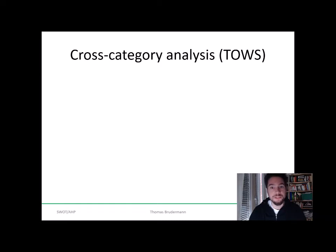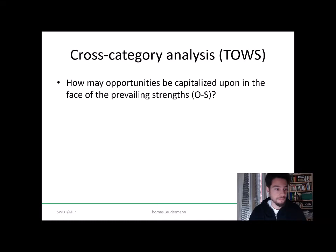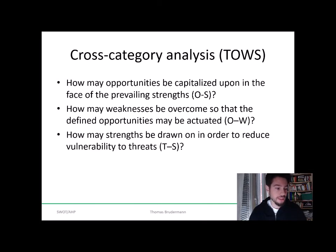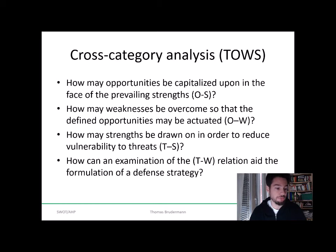A cross-category analysis can enhance your SWOT analysis by drafting certain strategies based on your analysis. For example, you can ask yourself how the opportunities identified for your product or technology may be capitalized upon in the face of prevailing strengths — this is the OS comparison. Then, how you may overcome your weaknesses to accentuate the previously defined opportunities — the OW comparison. How may strengths be drawn on to reduce vulnerability to threats — the TS comparison. And how an examination of the threats-weaknesses relation can aid the formulation of a defense strategy.